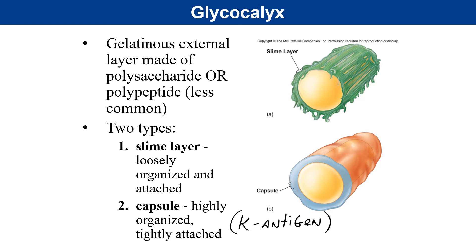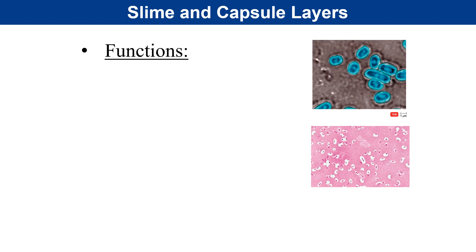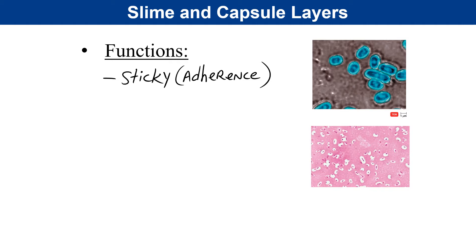Not all bacteria possess this particular layer. The functions of slime or capsular layers are many. First, we can focus on the stickiness — the ability of bacteria to adhere to surfaces in their environment or on tissues within the human body. They can be a source of major medical problems because bacteria that can produce slime or capsular layers have an increased ability to resist antibiotics.